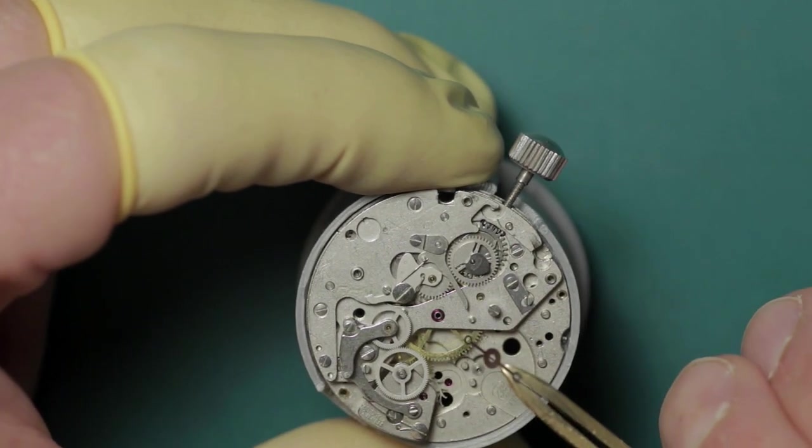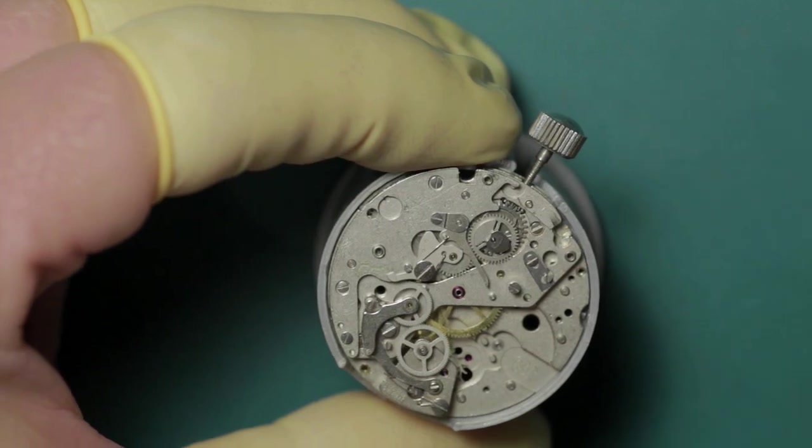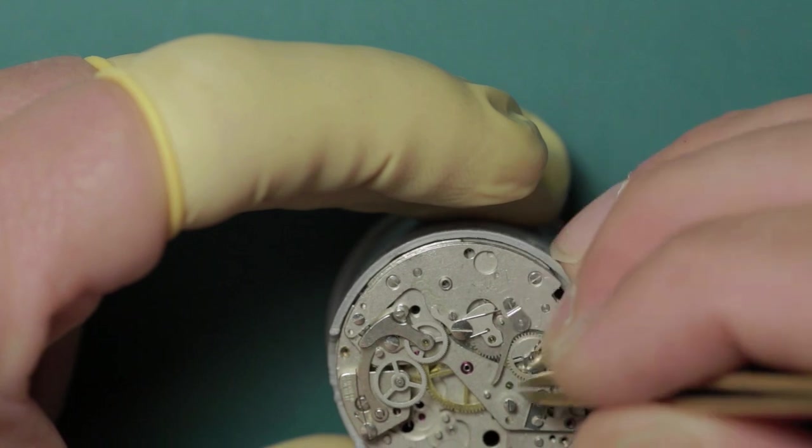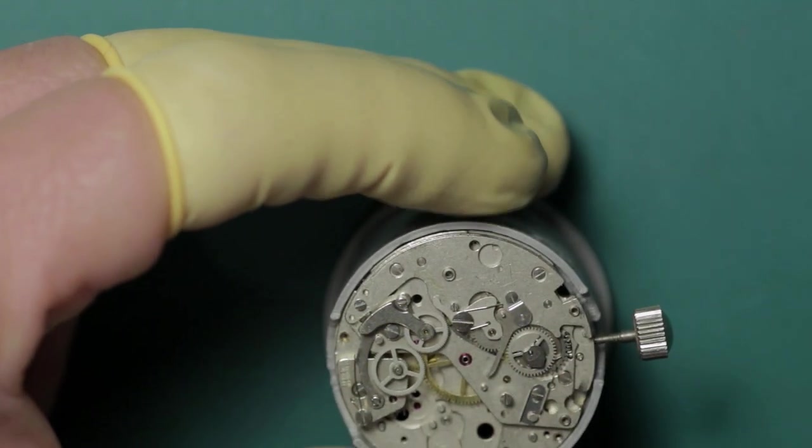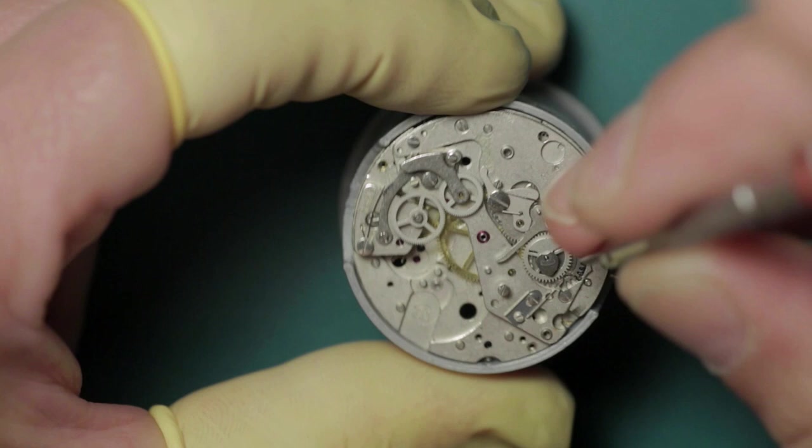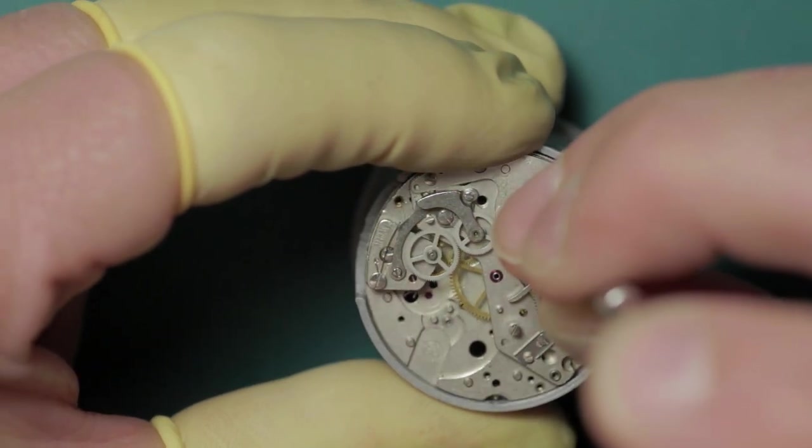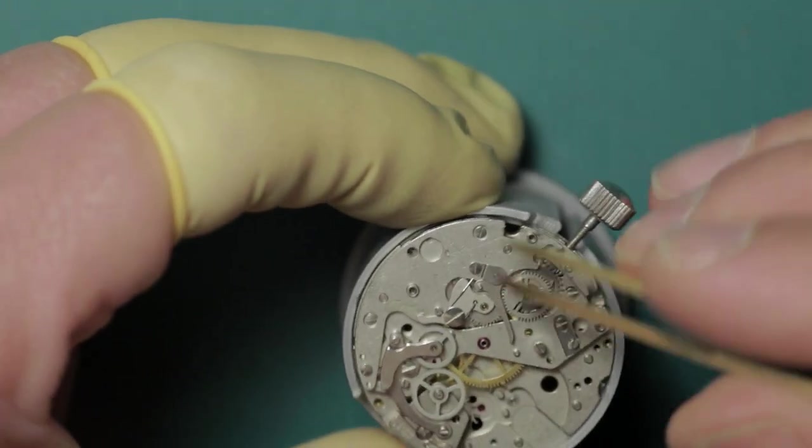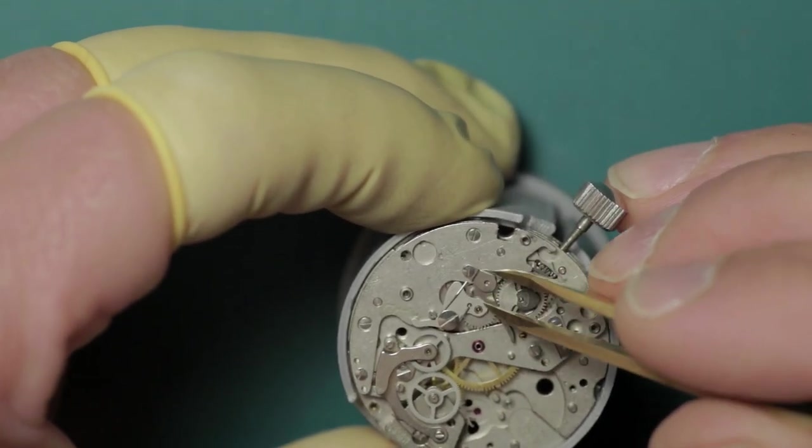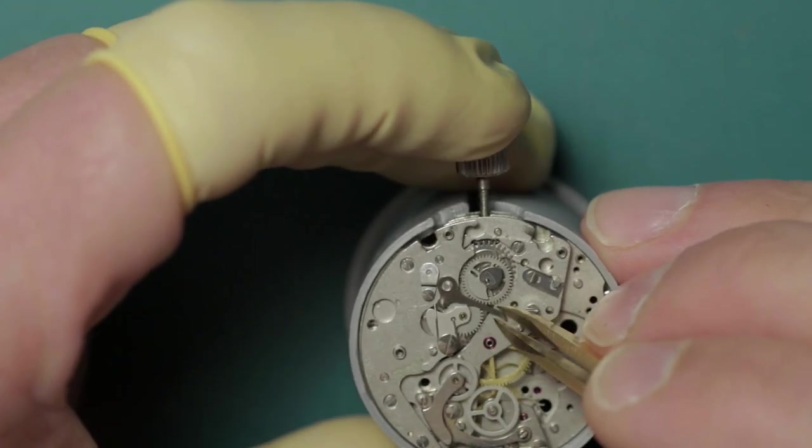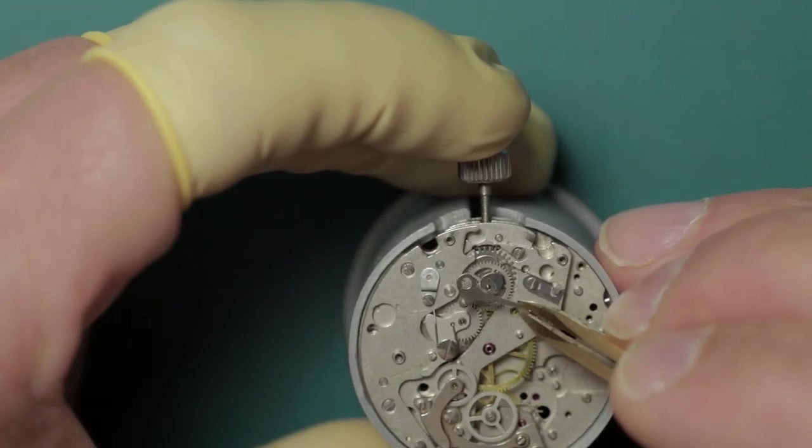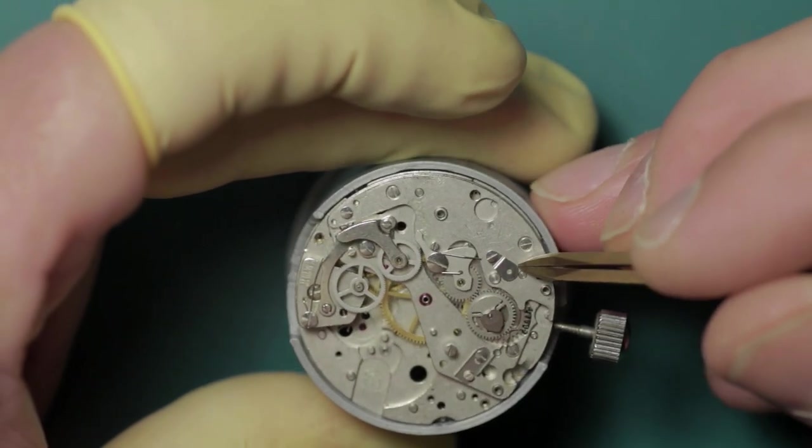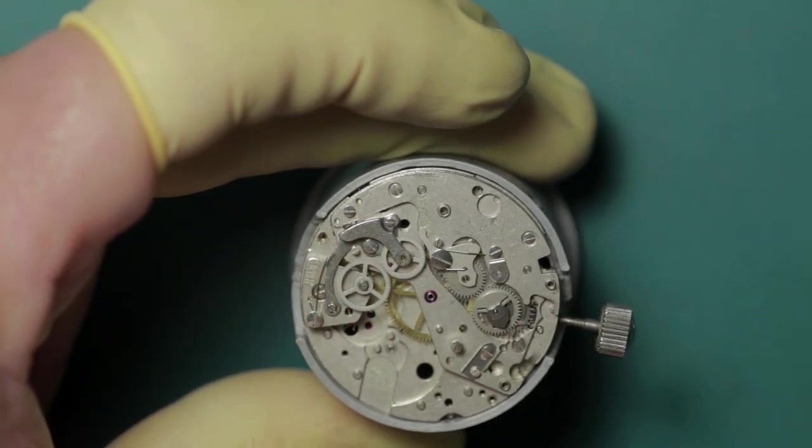Before we remove the minute recording runner we have to remove the brake lever, the chronograph runner brake lever. This is held by a post but held by a little sandwich thin sandwich plate which holds above it. This is one area that differs slightly to the Poljot 3133, where it's held by a single screw I believe if memory serves.